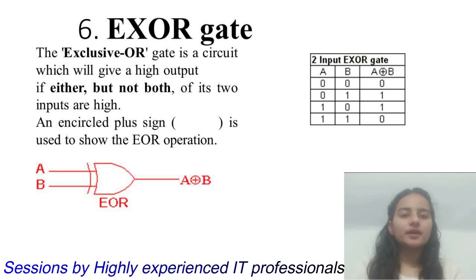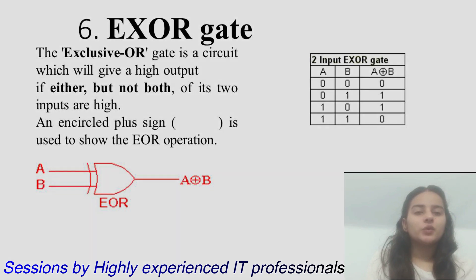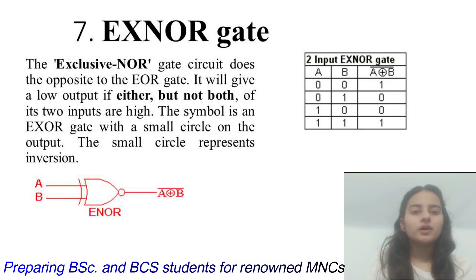Sixth, XOR gate — Exclusive OR gate. It's a circuit that gives high output if only one input is high, not both. Seventh, XNOR gate — Exclusive NOR gate. It is the opposite of the XOR gate.